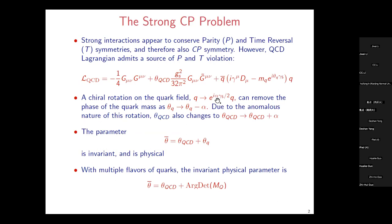The strong interactions appear to conserve parity symmetry as well as time-reversal symmetry. This is unlike the weak interaction, which breaks both. If time-reversal symmetry is broken, then because of conservation of CPT, CP symmetry would also be broken. But in the strong interaction, CP symmetry seems to be well preserved. However, if you look at the QCD Lagrangian, there is a source of violation of parity symmetry as well as CP symmetry. Here is the QCD Lagrangian with one flavor of quark.